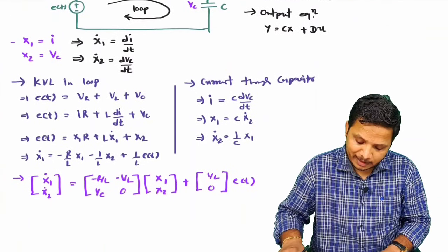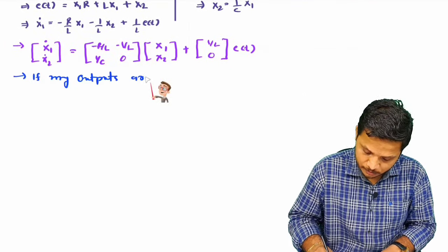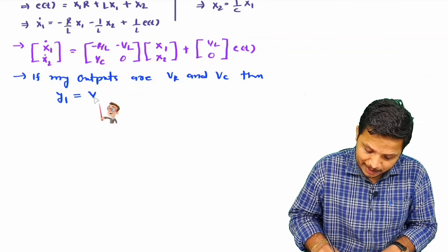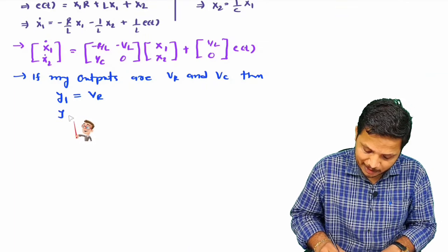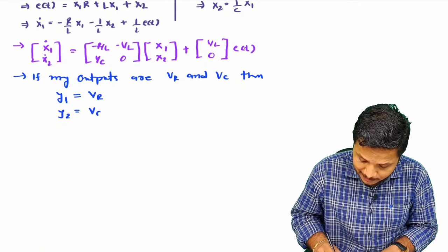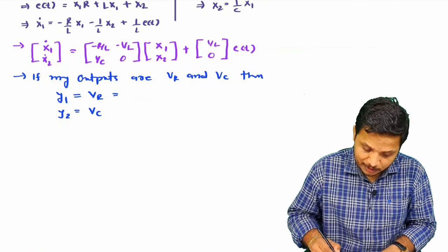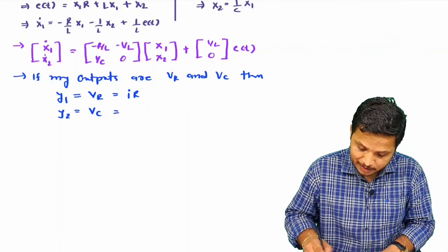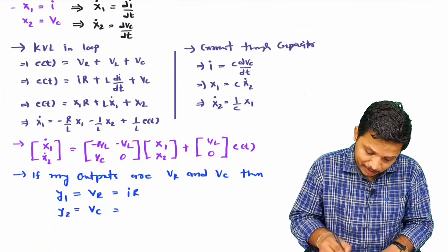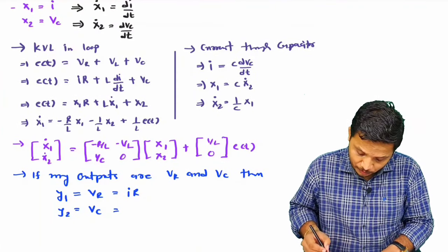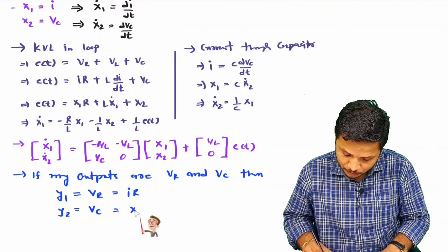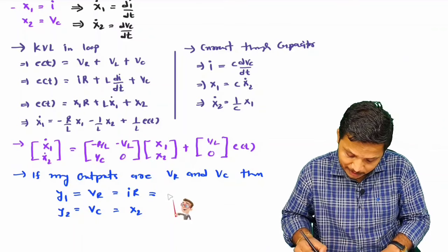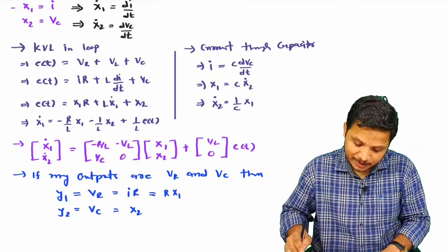Let y1 = Vr and y2 = Vc. Now Vr = i·R, and since i is x1, that is R·x1. Vc is already x2. So we have y1 = R·x1 and y2 = x2.